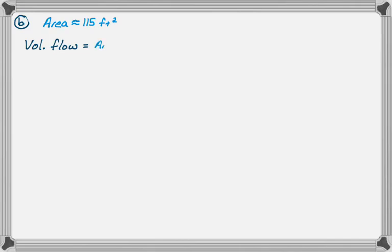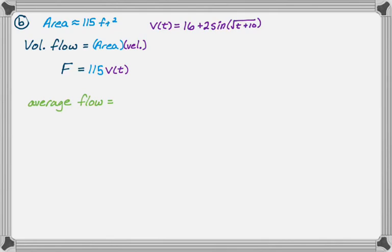So volumetric flow is the product of area, which we calculated, and velocity. Velocity is given in the problem—it's 16 plus 2 sine of root t plus 10. So I'm going to create a function. I'm just going to call it f. So f is the area 115 times the velocity v(t). Now what I'm asked to find—so that is my function for flow.